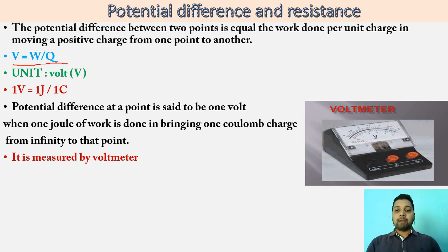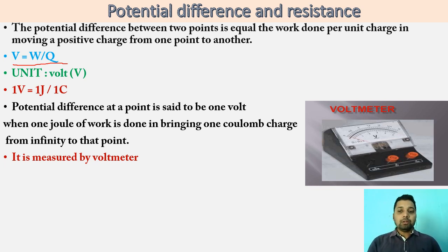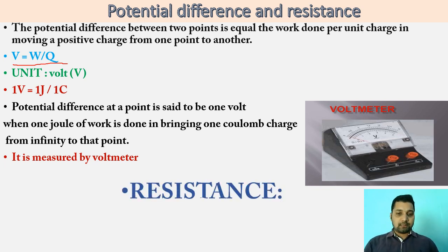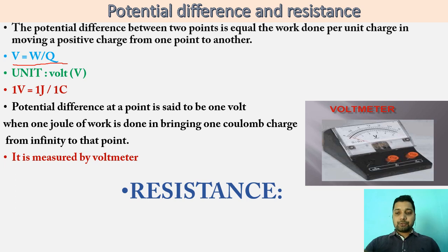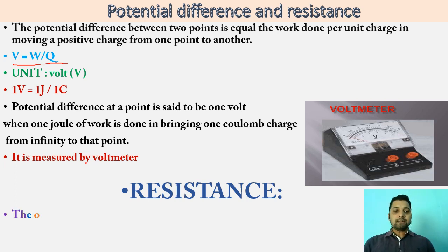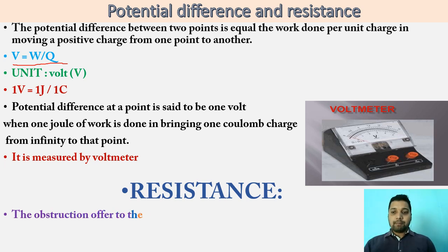Another factor responsible for the flow of current is called resistance. Whenever charge flows from one part to another, the obstruction or disturbance they encounter is called resistance. So resistance is the obstruction offered to the flow of current. If disturbance is more, less current will flow; if obstruction is less, more current will flow. With increasing resistance, current decreases.